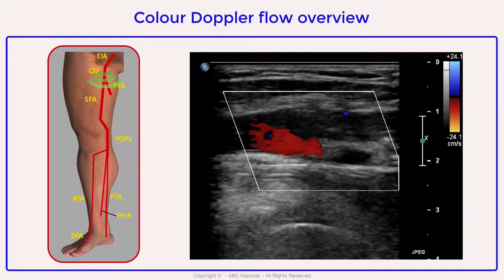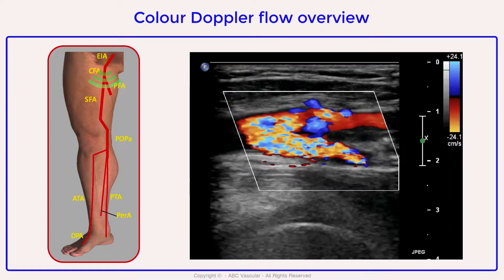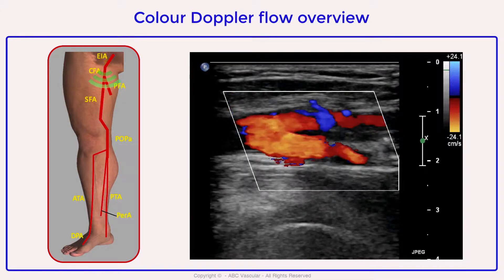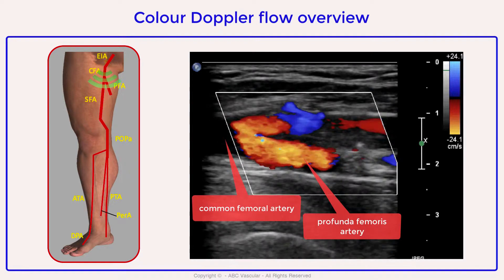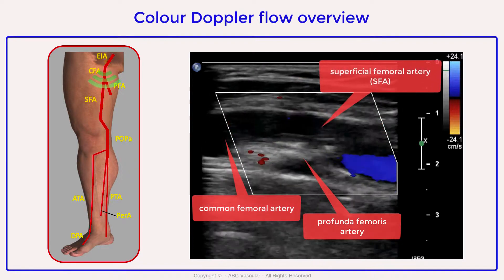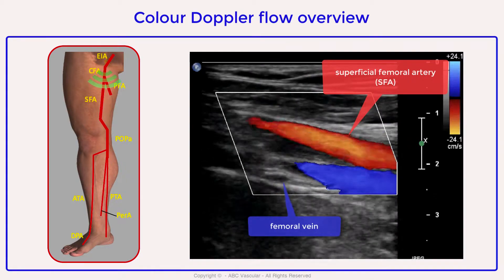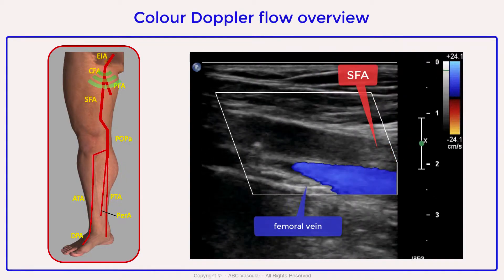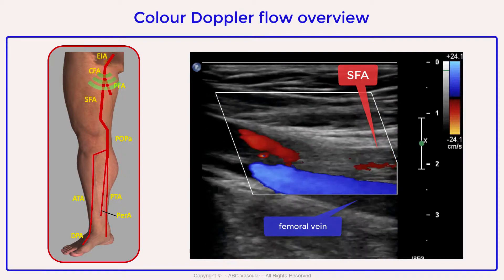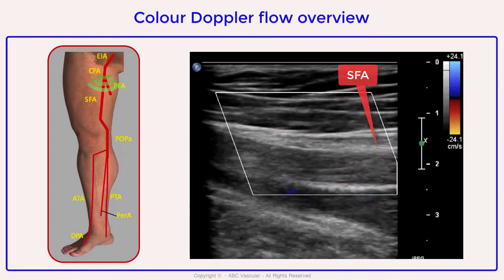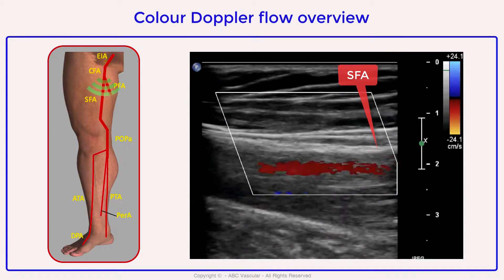In this video we can see the color flow assessment of the femoral bifurcation. We can identify the common femoral artery, the profunda femoral artery, and the superficial femoral artery, which runs superiorly to the femoral vein — the main anatomical landmark to identify the superficial femoral artery. The superficial femoral artery appears patent with color filling the entire lumen of the vessel.